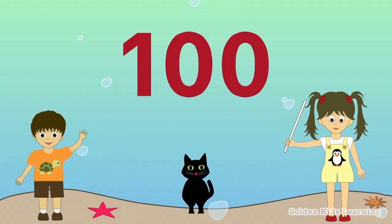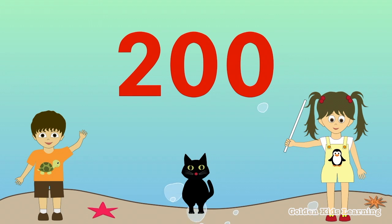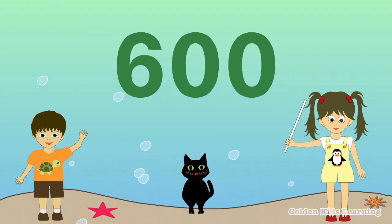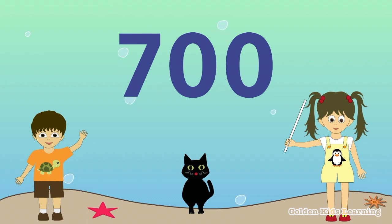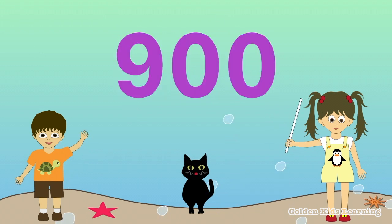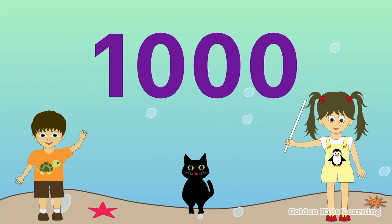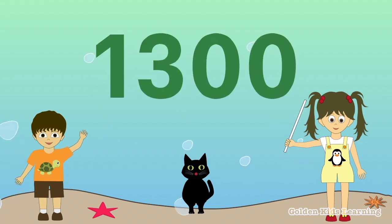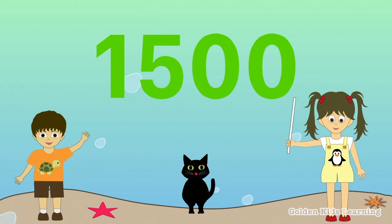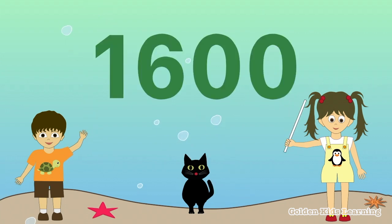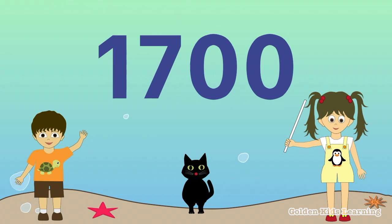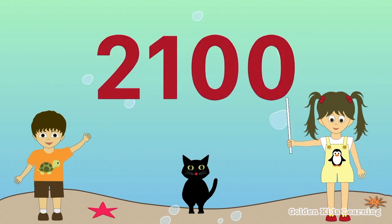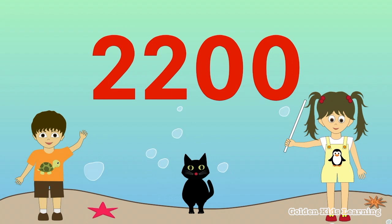100, 200, 300, 400, 500, 600, 700, 800, 900, 1,000, 1,100, 1,200, 1,300, 1,400, 1,500, 1,600, 1,700, 1,800, 1,900, 2,000, 2,100, 2,200.